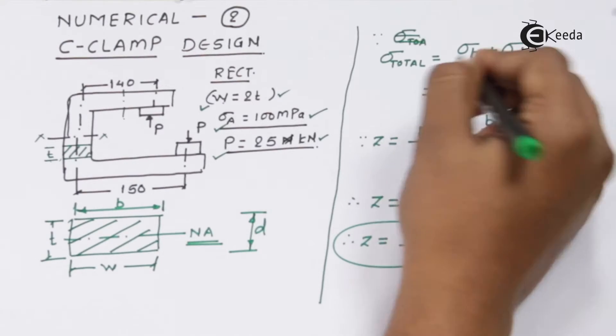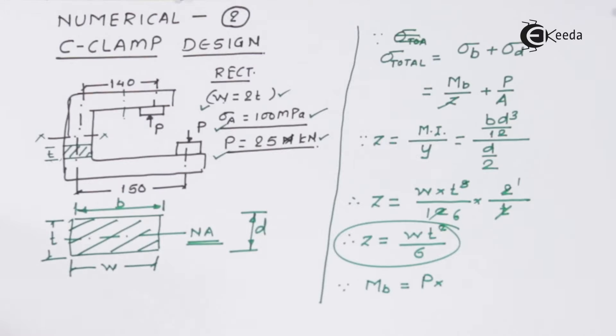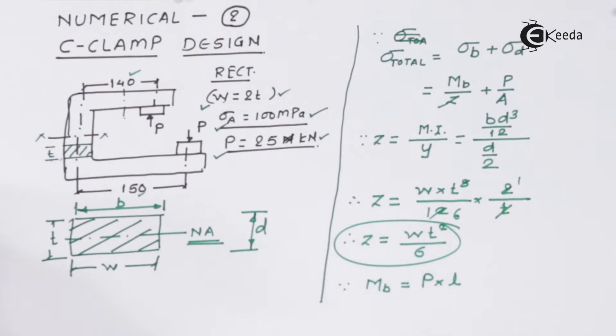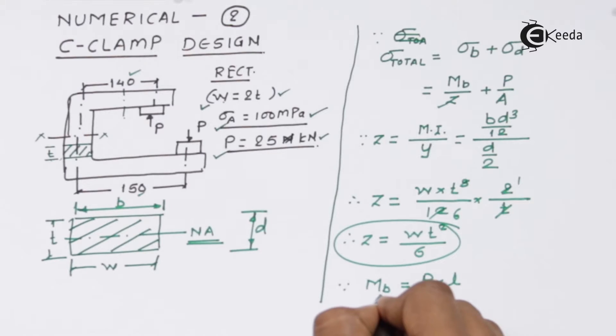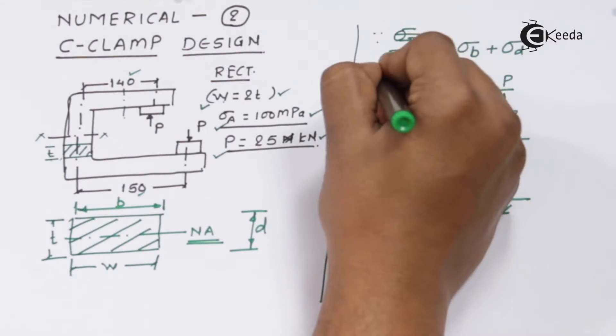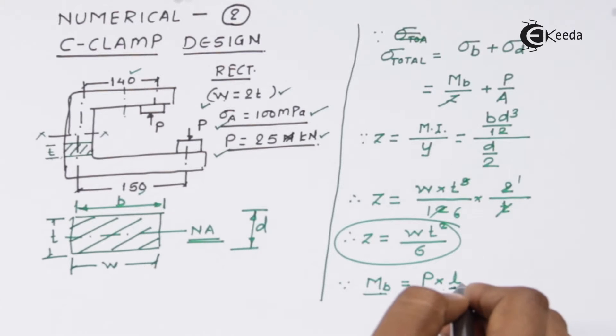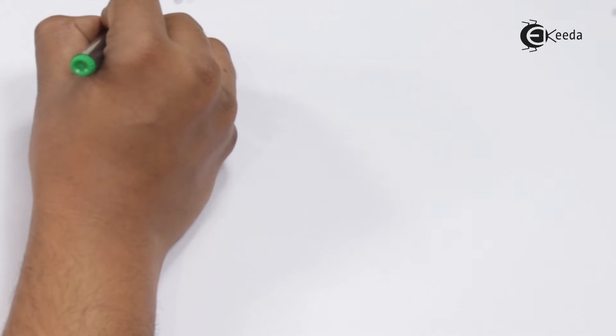Now we have to find out the maximum bending. Bending moment for any cross section can be given as the maximum load into the perpendicular distance L. As far as the application of P is concerned, we have got two values of L: 150 and 140. Since bending moment is directly proportional to the length, more the distance, more will be the bending moment. Since bending moment is directly proportional to the maximum stress it can sustain, we will go for the maximum length.